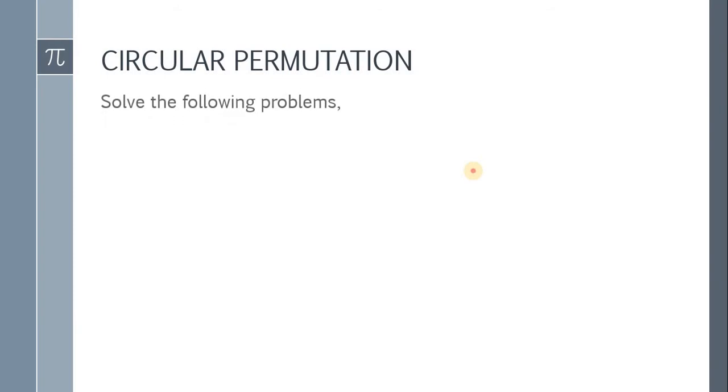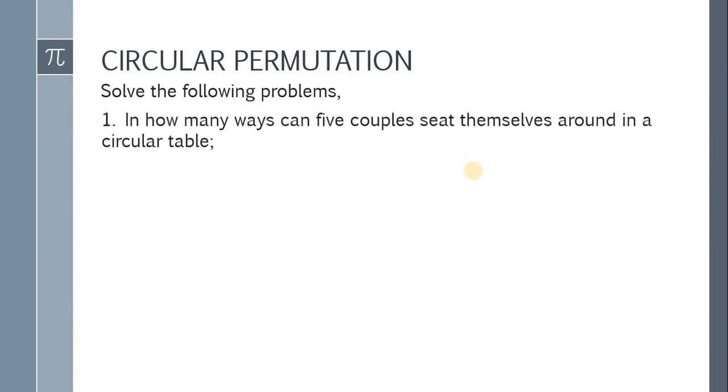Here's our first question. Question number one. In how many ways can five couples sit themselves around in a circular table if, letter A, spouses sit opposite each other? And letter B, men and women are alternate.